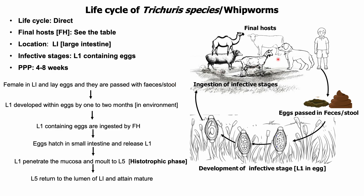The infective stage is the L1-containing egg. The female parasite in the large intestine lays eggs which are passed with feces into the environment. L1 develops within eggs over one to two months under favorable conditions. At low temperatures, for example below 20 degrees Celsius, development of L1 takes longer. The infective stage may remain viable for several years. Final hosts are infected by ingestion of L1-containing eggs through contaminated food and water.